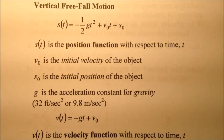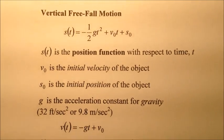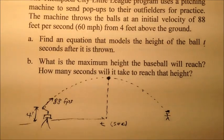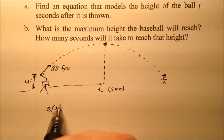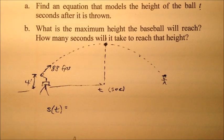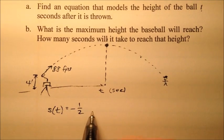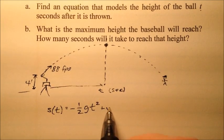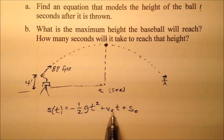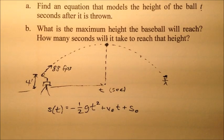I'm going to rewrite this equation so we can fill in the parts. I have my position function s(t) = -½gt² + v₀t + s₀.